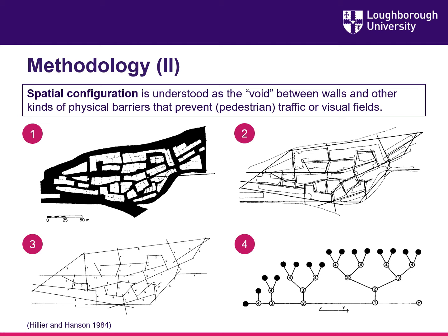One has to consider that the relationship between spatial configuration and traffic is generally speaking smaller for motorized vehicles and bigger for non-motorized vehicles such as bicycles and pedestrians.